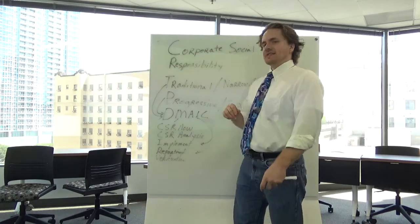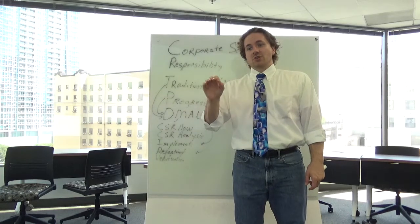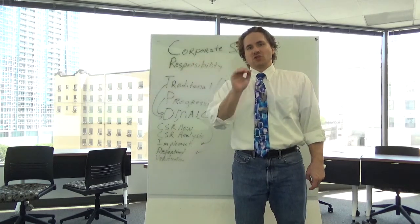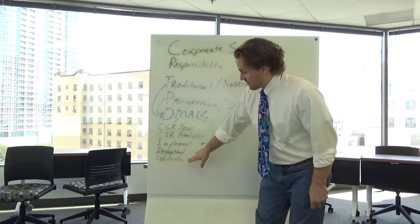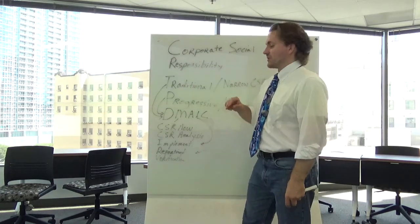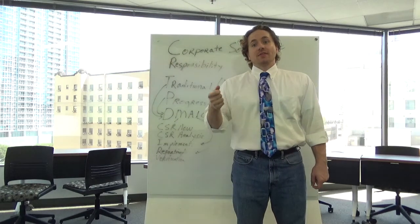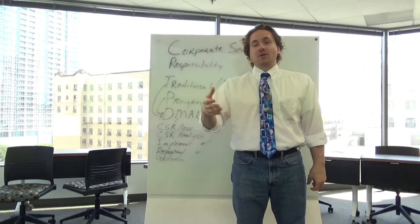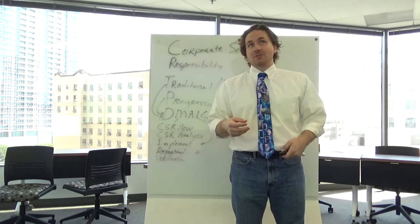The control phase in Lean Six Sigma says let's write standard operating procedures and make sure that we permanently have changed this process and we don't go back to the problems that we had before. Whereas in CSR implementation, reporting and verification for the control would mean let's make sure that the money that we've given or the way we're using the money matches what we wanted to do, that we haven't gone back to maybe our old ways.